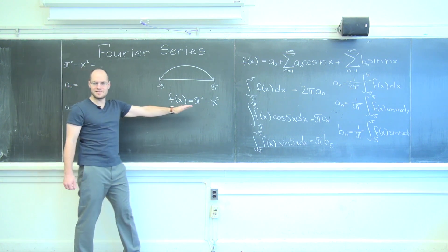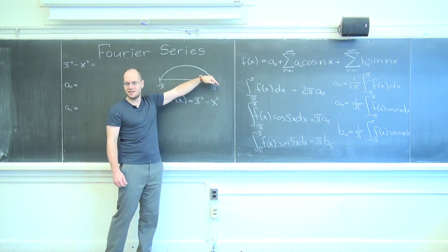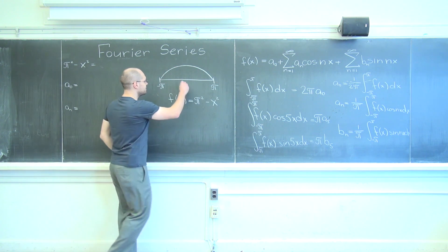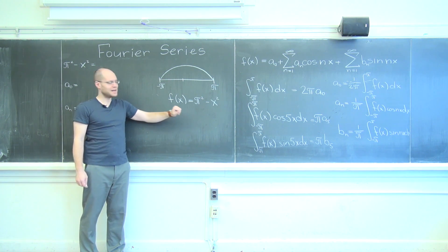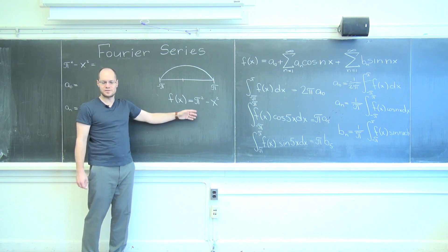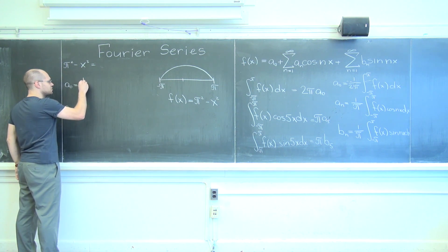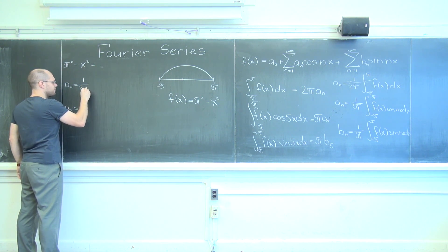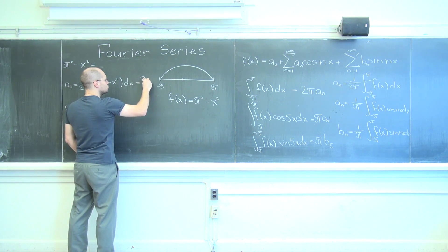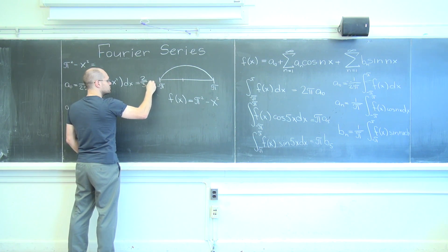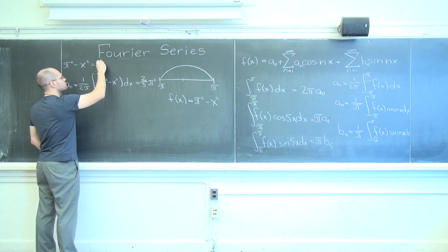The series expansion won't have any sines in it because this function is even. We will only have the free term and the cosine terms. Starting with the free term: a₀ equals one over two pi times two-thirds pi squared. And we have our free term.